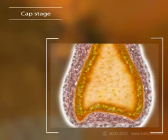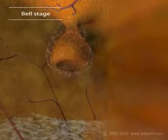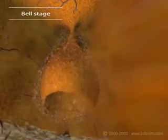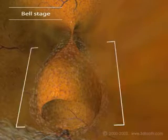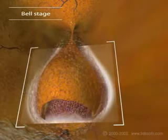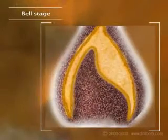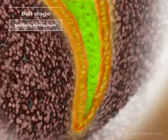So far we've seen the bud and cap stage of tooth development. The third and most dramatic is the bell stage. As the tooth germ begins to grow, the cells differentiate. The stellate reticulum is now obvious — made up of star-shaped cells pushed apart by fluid pressure, it separates the inner and outer enamel epithelium.